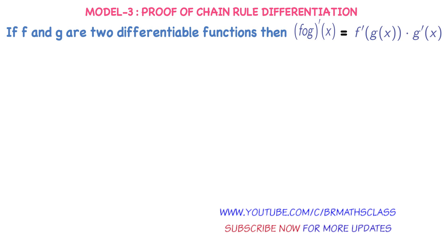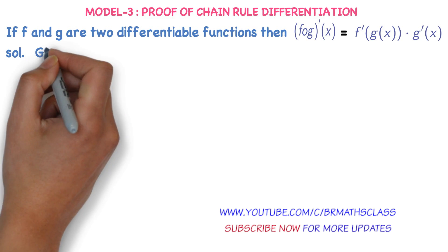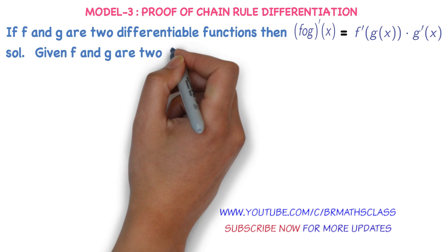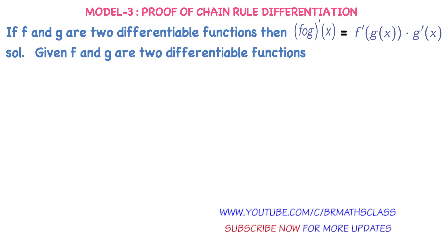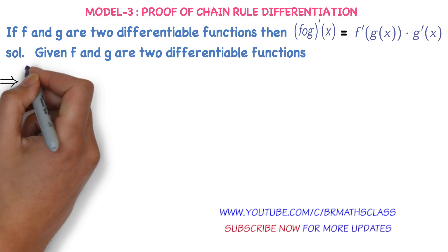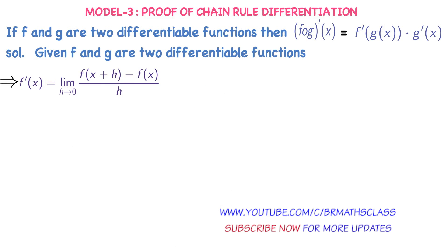We are going to prove this now. Given: f and g are two differentiable functions, meaning the derivative of f exists and the derivative of g exists. From the first principle of derivative, if f(x) is differentiable, then f'(x) = limit as h tends to 0 of [f(x+h) − f(x)] / h exists.